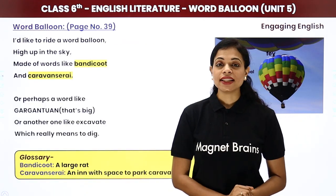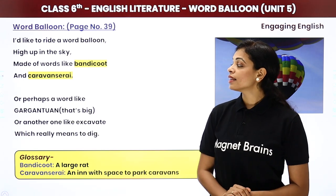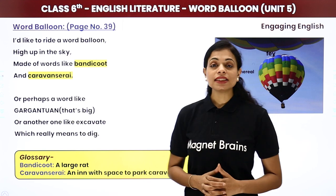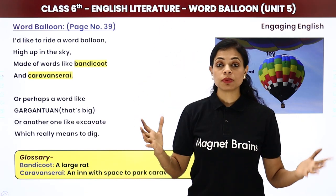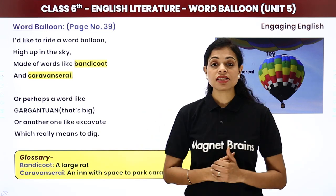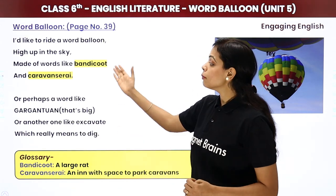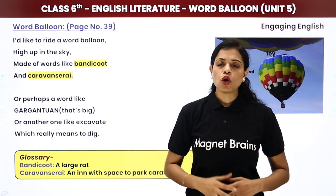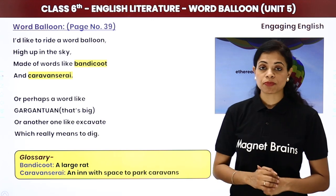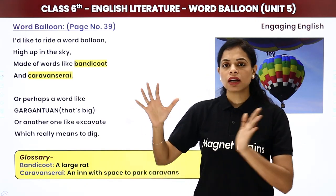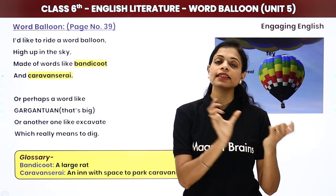The poet says: 'I would like to ride a word balloon high up in the sky, made of words like bandicoot and caravan sarai.' She wants to ride a word balloon that goes high up in the sky, like hot air balloons, made of different words. Bandicoot means a large rat. Caravan sarai is an inn with space to park caravans — a large lodge where travellers can stay. Sarai is a Hindi word, and from it this English word has been formed.